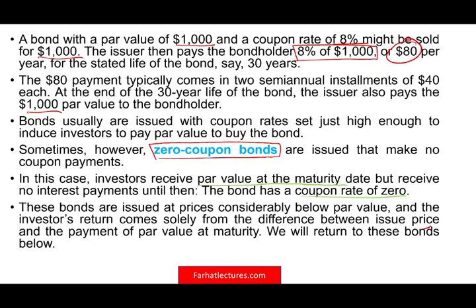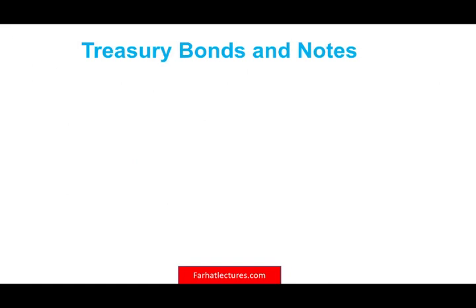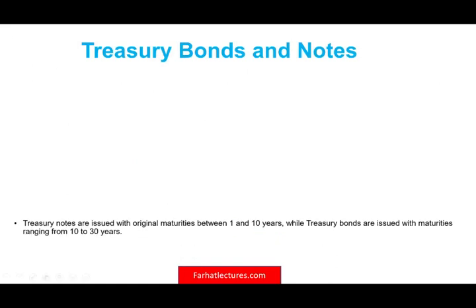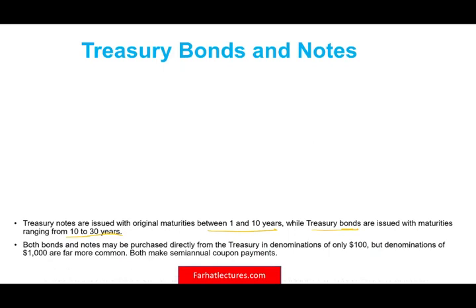The investor's return comes solely from the difference between the issue price and the par value payment at maturity. Just like corporations can borrow money, governments also borrow money using treasury bonds or treasury notes. Treasury notes are issued with original maturity between one and ten years, while treasury bonds have a longer term of 10 to 30 years. You can purchase them directly from the treasury in denominations of $100, though $1,000 denominations are more common. Both make semi-annual payments.